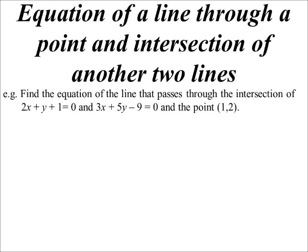So something like this. There's our two lines, 2x plus y plus 1 equals 0, 3x plus 5y minus 9 equals 0, and we're also told it goes through the point 1, 2.